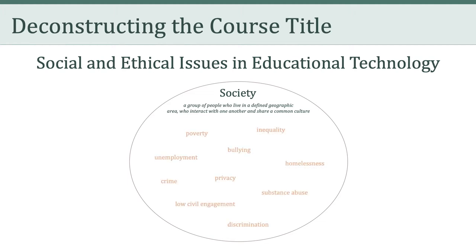Examples of social issues include poverty, all kinds of inequities, criminality, or a lack of civic engagement. Fortunately, most societies don't just stand by and watch these problems fester. Instead, they create different initiatives and establish various institutions to try and mitigate the problems they're facing. The goal overall is to improve the society as a whole.